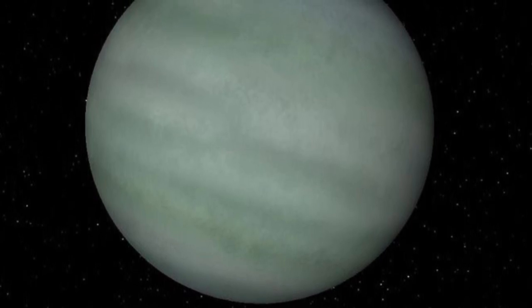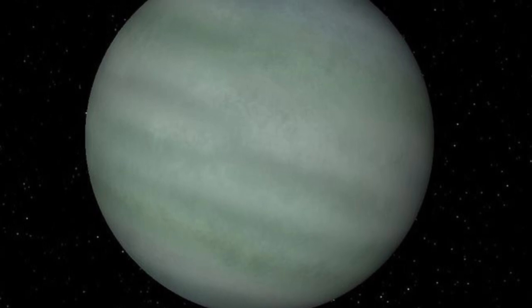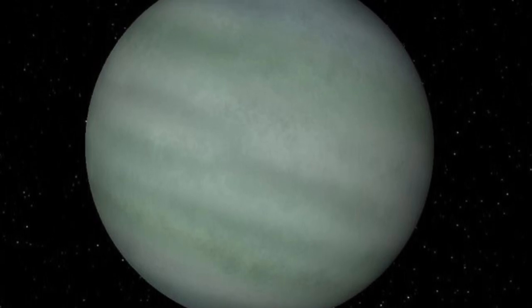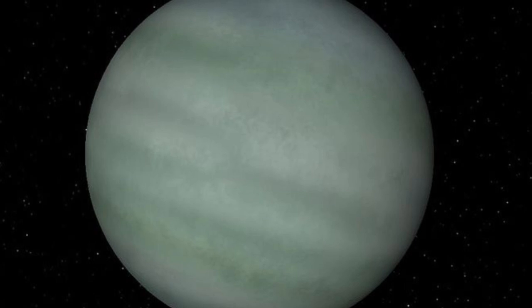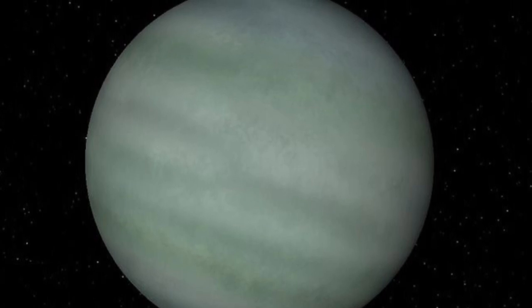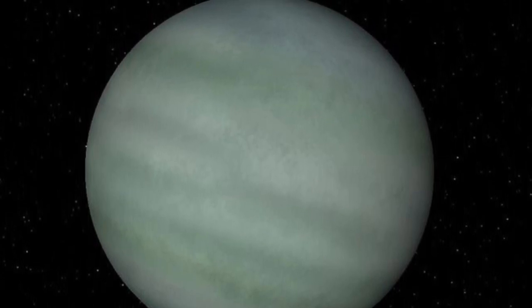Observations of an exoplanet called WASP-17b suggest that it is even bigger than Tress IV. Despite having a radius double that of Jupiter's, it has only half the mass, making it fluffier than Tress IV.